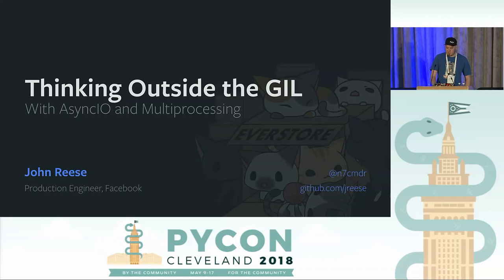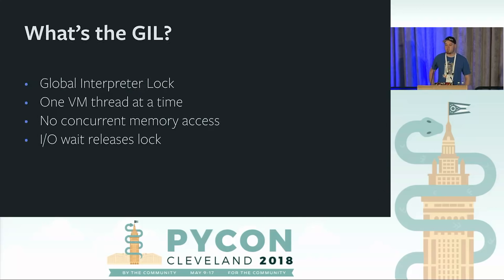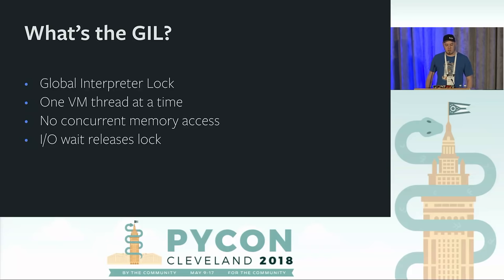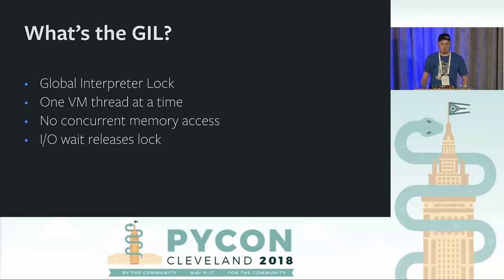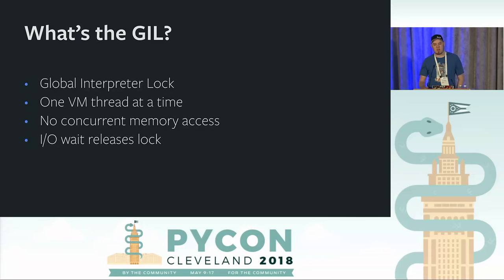Before I get too far in, some of you might be wondering: what's the GIL? It stands for the global interpreter lock. It's basically the one piece of the Python runtime that prevents multiple threads from executing on the VM at the same time. It also prevents concurrent memory access to Python objects. This does have some performance effects, but it also lets your code stay simple and allows you to not have to worry too much about thread safety.